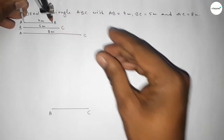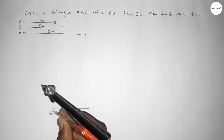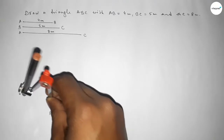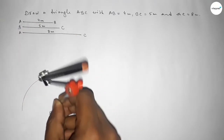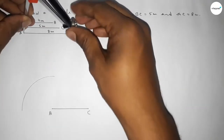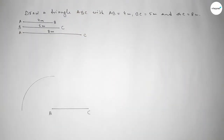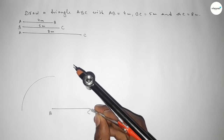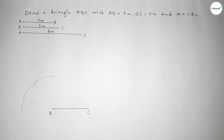Next, we take the length AB equal to 4 centimeters using the compass, place the compass on point B, and draw an arc. Then we take the length AC equal to 8 centimeters using the compass, place it on point C, and draw another arc to intersect the first.